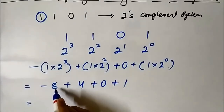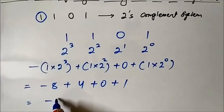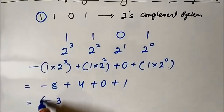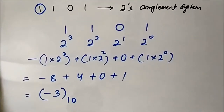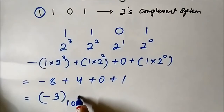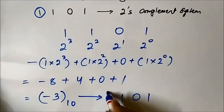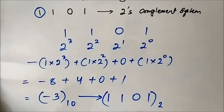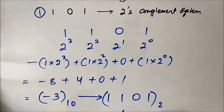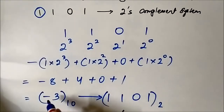The result is minus 8 plus 4 plus 1, which equals minus 3. This is the final result — the decimal value of the given signed binary number is minus 3. So this signed binary number 1 1 0 1 represented in 2s complement system has a decimal value of minus 3.